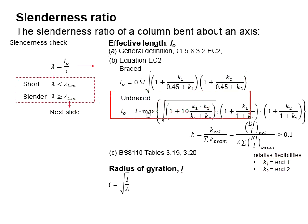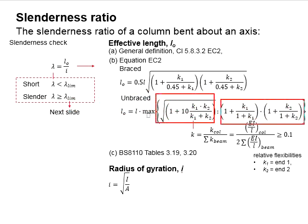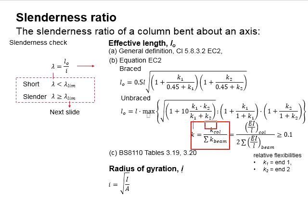As for unbraced structures, the larger value of these two equations is used. k is determined from the stiffness of the column divided by the total stiffness of the beam. As given in these equations, the stiffness is determined in the function of EI per L. k should theoretically be greater than 0.1.